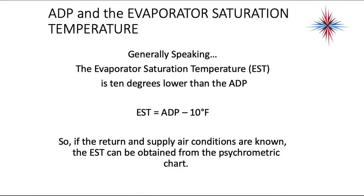The ADP and the evaporator saturation temperature are related. Generally speaking, the evaporator saturation temperature, or EST, is 10 degrees lower than the ADP. So if you know your return air temp and wet bulb temp, and your supply air dry bulb and wet bulb temp, you can calculate your ADP by extending that line out. Once you know that, you can figure out your evaporator saturation temperature, which helps in troubleshooting cooling issues.